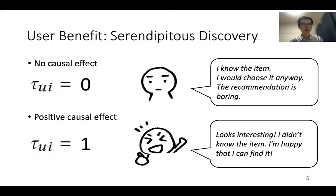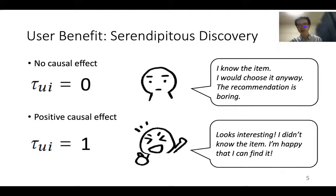So, why do we care about the causal effect? Because it's beneficial to both users and service providers. For users, it can lead to the serendipitous discovery of items. When there's no causal effect, a user might feel: I know the item, I would choose it anyway — the recommendation is boring.